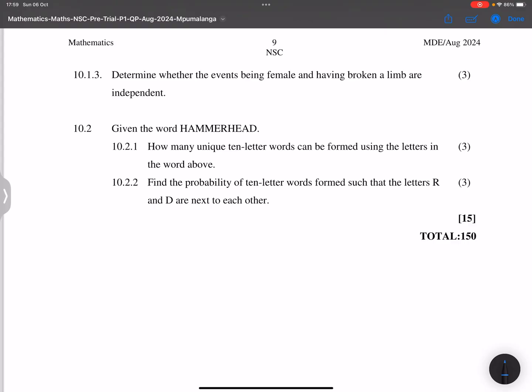So let's go on to the next one. They say determine whether the events of being female and having broken a limb are independent. So remember for independent events, I'm going to look at being female and breaking a limb, having a broken limb. So the probability of being female and a broken limb.